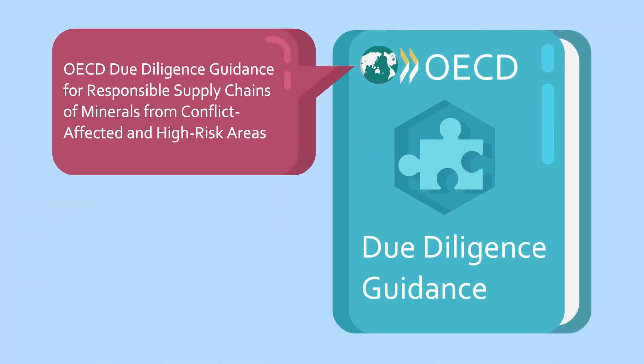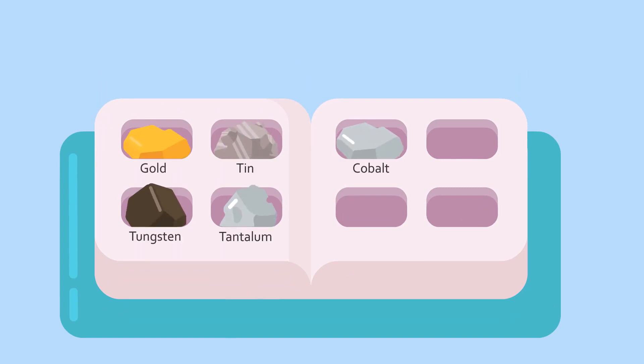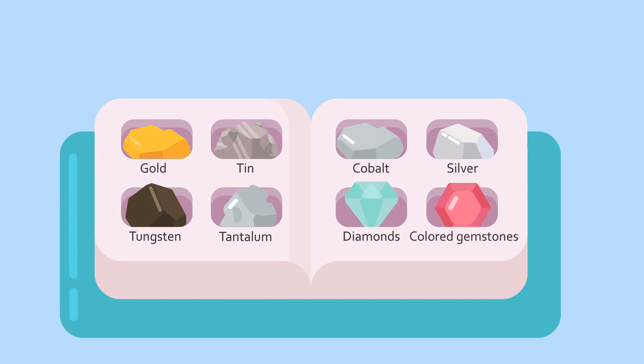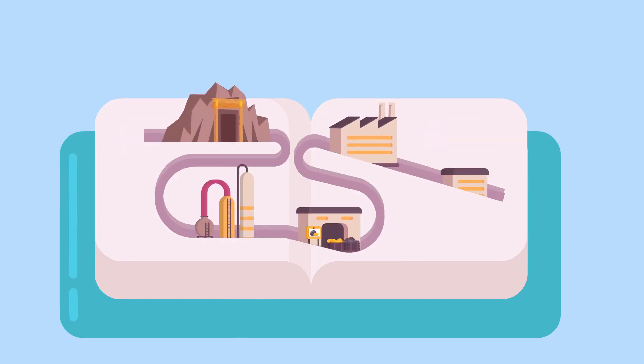The OECD Due Diligence Guidance provides one set of expectations for all of them. It's general enough to apply to all minerals — gold, tin, tungsten, tantalum, cobalt, silver, diamonds, colored gemstones, etc. — and to everyone in the supply chain: miners, processors, traders, manufacturers, and end users.